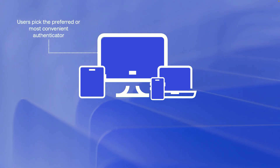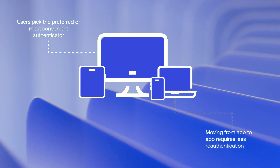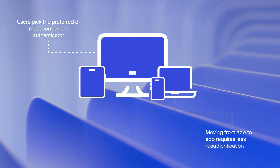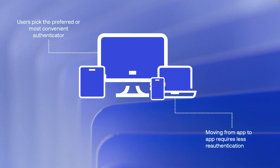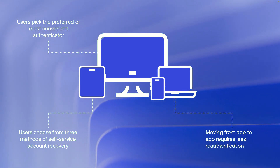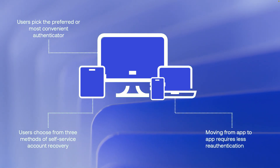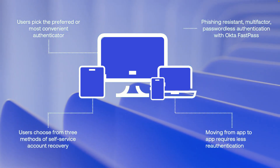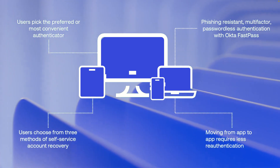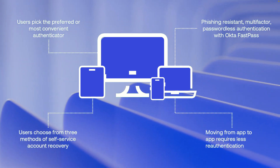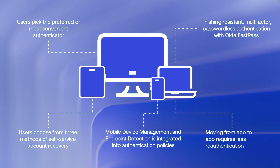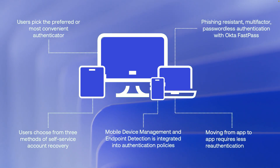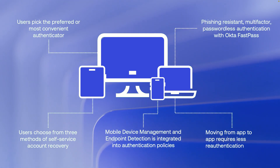Moving from app to app requires less re-authentication thanks to OIE's assurance model and use of shared authentication policies and the new policy framework. Self-service account recovery has been expanded where users now have three methods to recover from a lost or forgotten password or an account lockout. Identities are protected through a phishing-resistant, multi-factor, passwordless authentication method called Okta FastPass. Mobile device management and endpoint detection is integrated into authentication policies for improved security to reduce the risk of unwanted or unauthorized behavior.